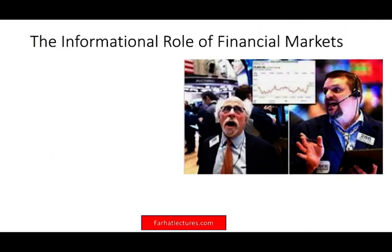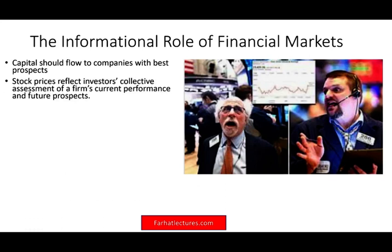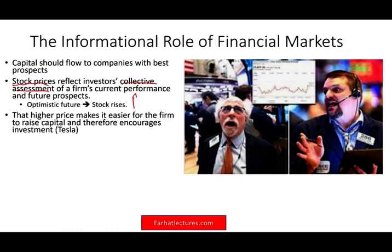Generally speaking, capital should flow to the best companies — those with the best prospects and best future. How do we know if a company is doing well? One thing to do is look at their stock price. The stock price represents the investors' collective assessment — professional investors, amateurs, institutional investors. If the stock price goes up, we assume an optimistic view about the company. An optimistic future means the stock price rises, signaling that we need to channel more capital to that company because there's a good prospect.